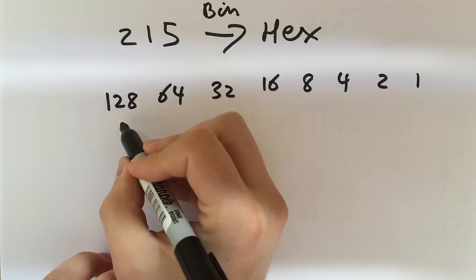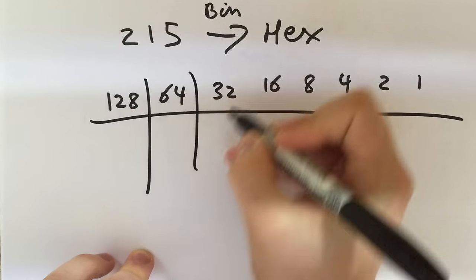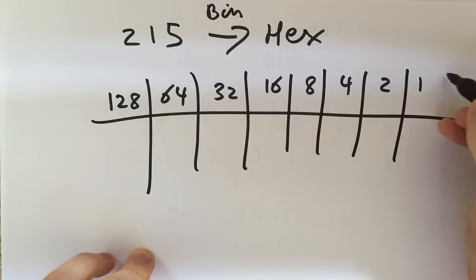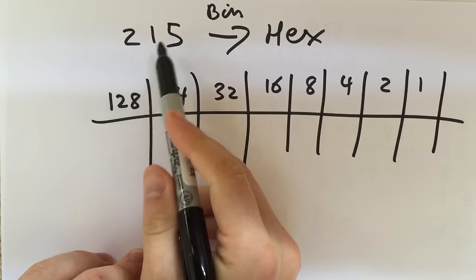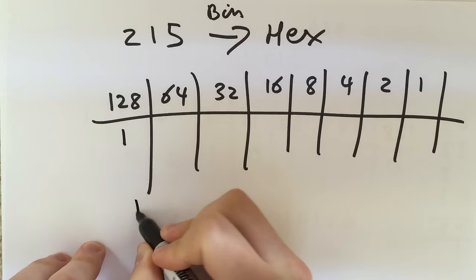I need to get 215 so I can have, let's just make my columns nice and pretty. So will 128 go into 215? Yes. And that means I am up to 128.